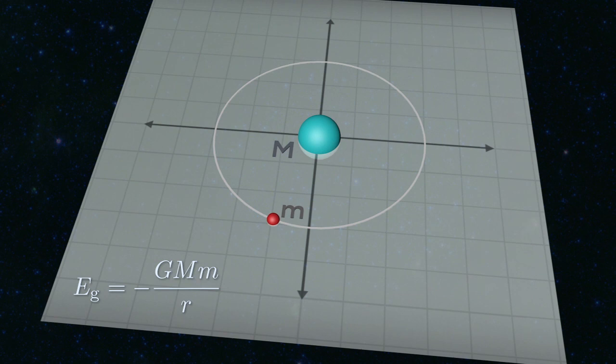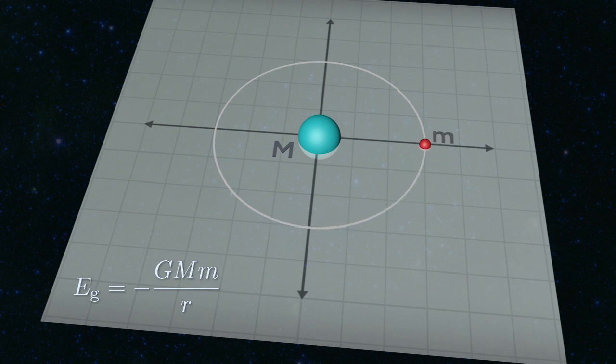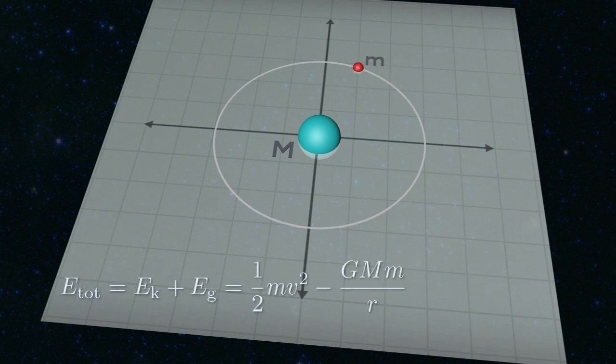If we let little m fall toward the origin, R shrinks, and according to the formula the potential energy becomes more negative, which implies that positive energy must be showing up somewhere else, since the total energy is conserved. And that does make sense. The kinetic energy, one-half mv squared, is increasing as the mass accelerates toward the origin. The gravitational potential energy is being converted into kinetic energy. So that's gravity.